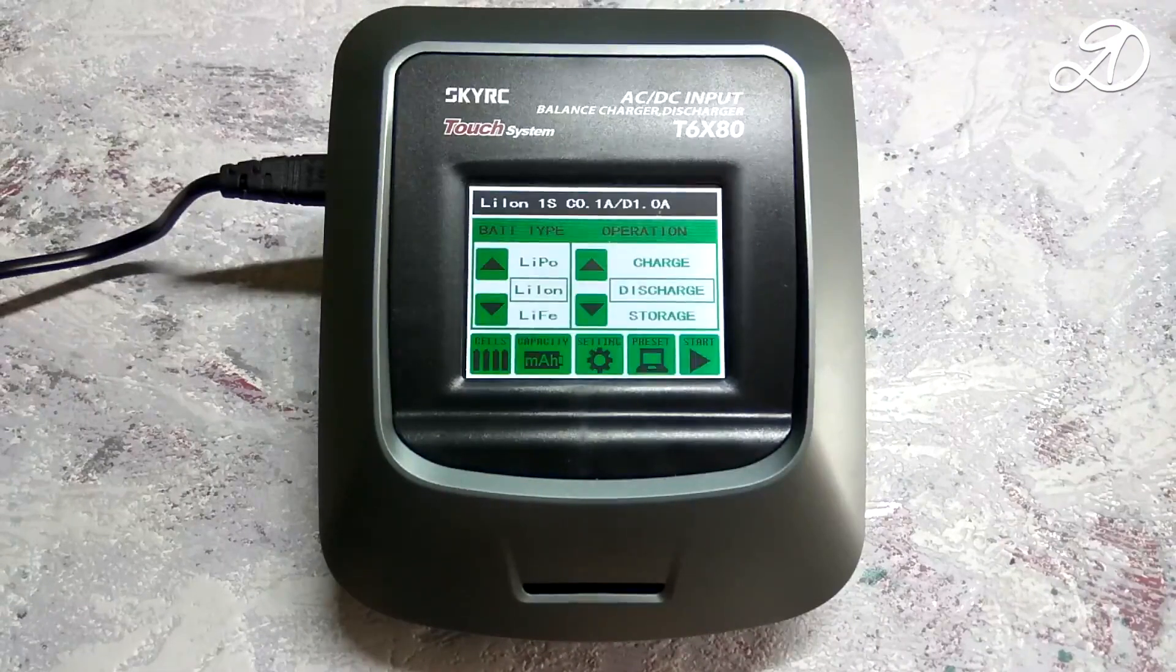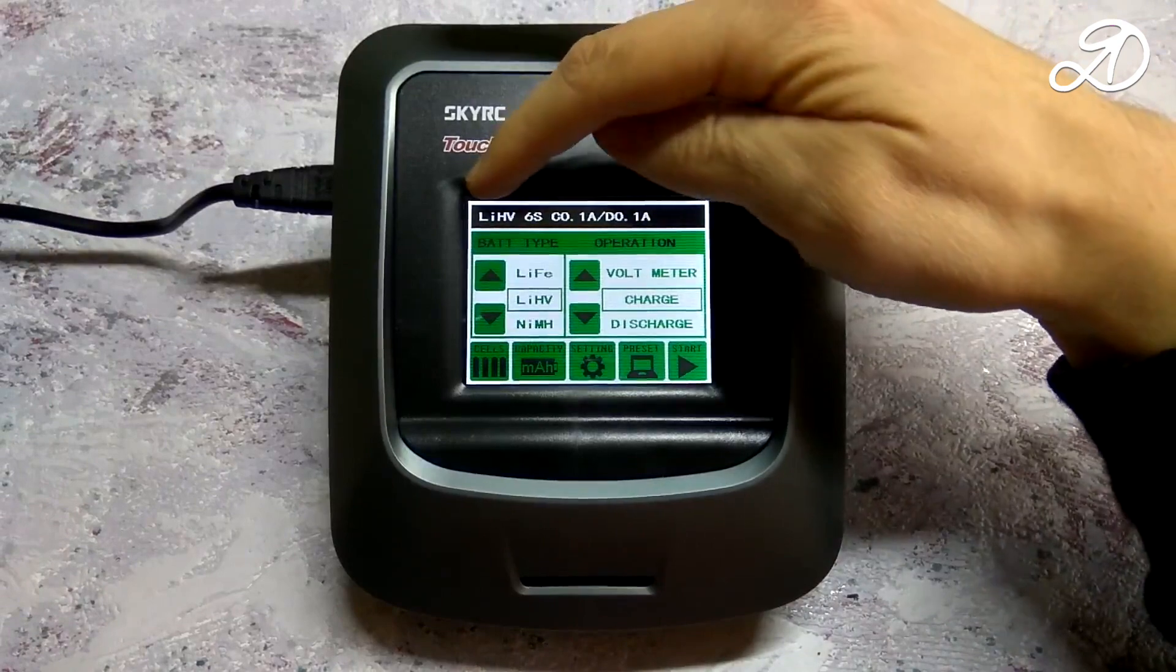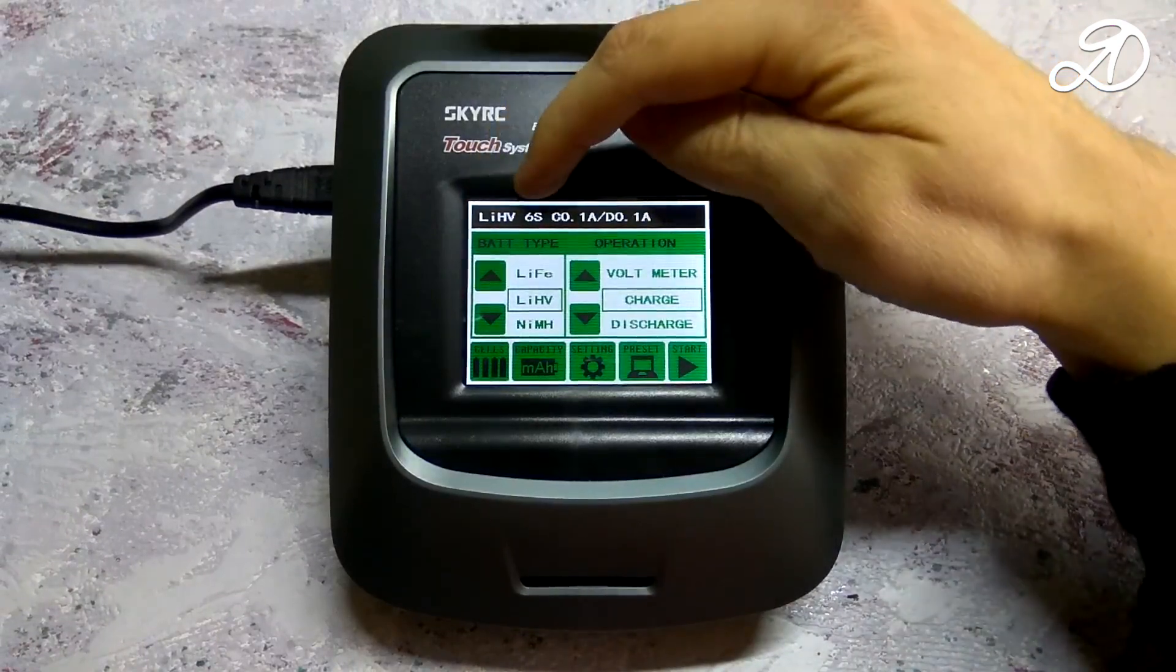Let's look at the elements of the screen: battery type, number of cells, charge current and discharge current.